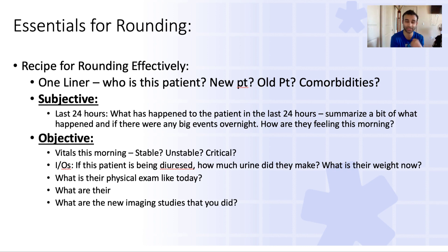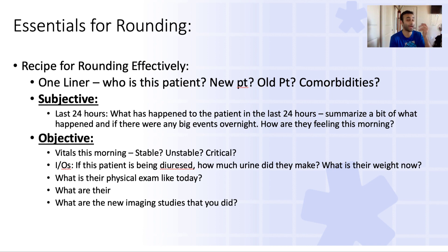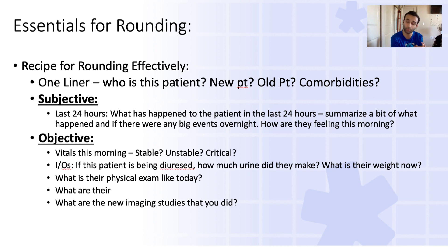Once you have that one-liner, you focus on the subjective aspects of the patient — based entirely on what the patient says they are feeling. You ask the patient how they're doing this morning, where their pain is, and how they're responding to that pain. You also want to summarize what happened in the last 24 hours. For example, if yesterday we got an infectious disease consult because we were worried about endocarditis, you'd ask: what did ID say? Did they recommend antibiotics? If so, for how long, and IV or PO? When do they expect to transition to PO? Recap the last 24 hours and end with thinking about what the patient is feeling this morning.